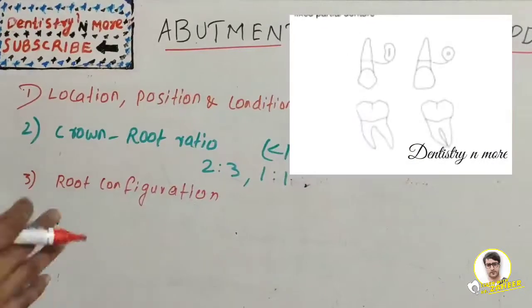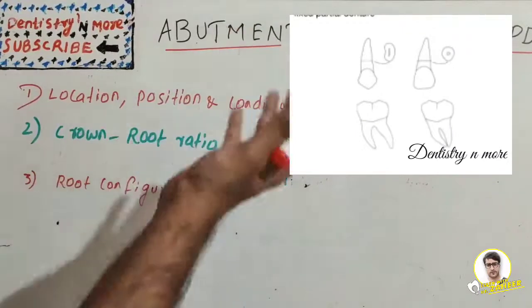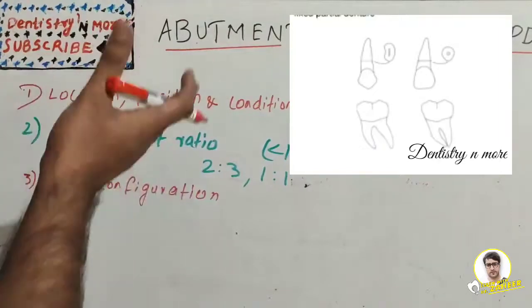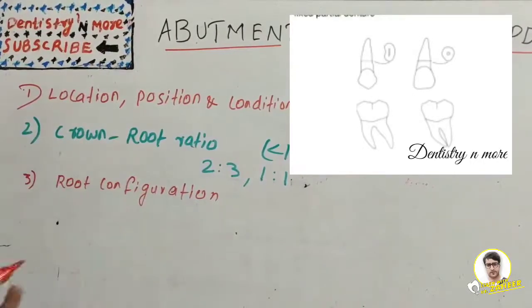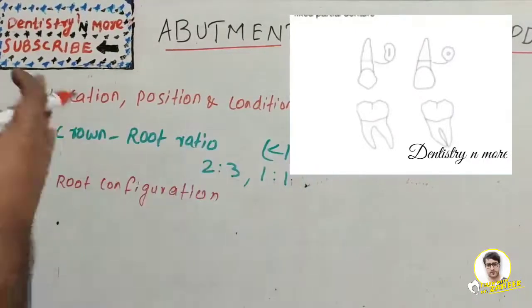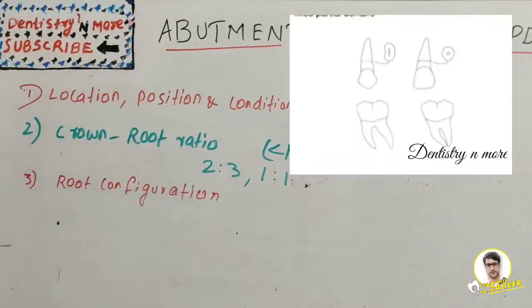Next is root configuration. Forces acting on the tooth are transferred to supporting bone through the root. The shape of the root determines the ability of the abutment to transfer masticatory forces to the supporting bone. Roots with greater labiolingual width are preferred, or roots with irregular curvature are preferred rather than straight ones because they can withstand more forces in more directions - oblique directional forces and forces acting through the long axis of tooth. Curved roots or roots with more buccolingual width are preferred. Teeth with longer roots serve as better abutments. Canines are better abutments than lateral incisors. Teeth with conical roots can be used for short-span fixed partial dentures.